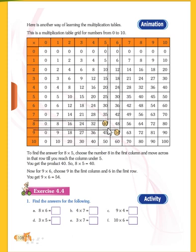Now for 9×6, see this is 9, we have to move up to 6. 9×6, 9, this is 6 column. 9×6 is 54, right?